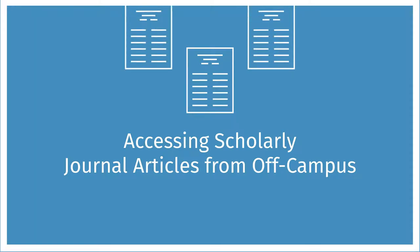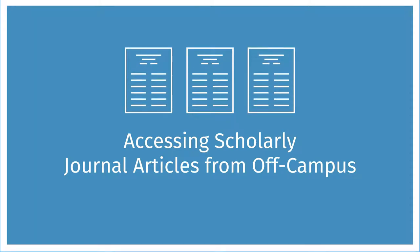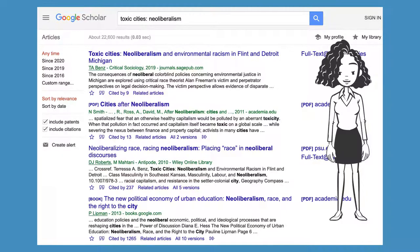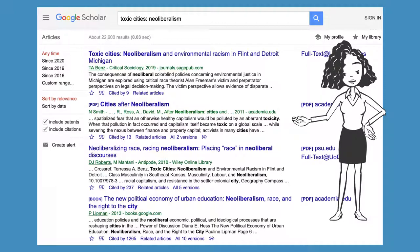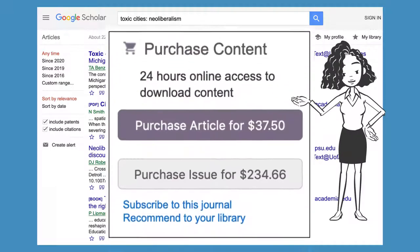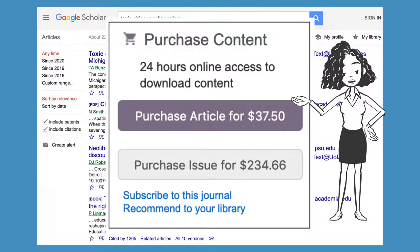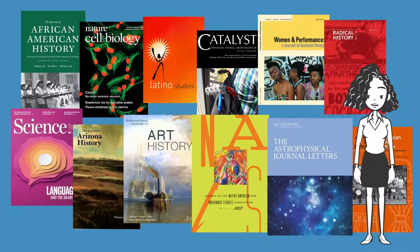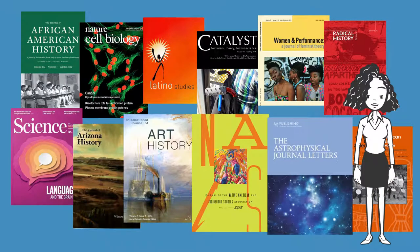Welcome to our tutorial on accessing scholarly journal articles from off campus. Do you need a scholarly article for a class assignment? Did you search for an article in Google or Google Scholar and hit a paywall like this one? If so, this video is for you. As a University of Arizona student, you have free access to millions of academic journals and you should never have to pay for articles.